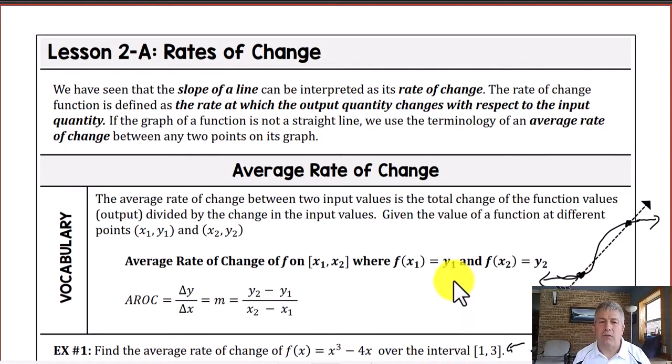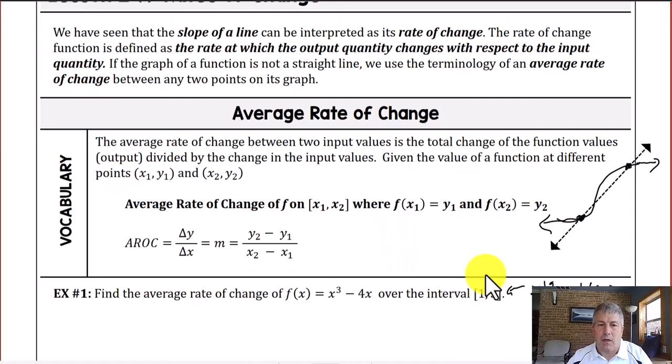So instead of calling it a constant rate of change, it's just the average rate of change between those two particular points. So our rate of change, our slope, is still going to be the change in y over the change in x. You know y2 minus y1 all over x2 minus x1.